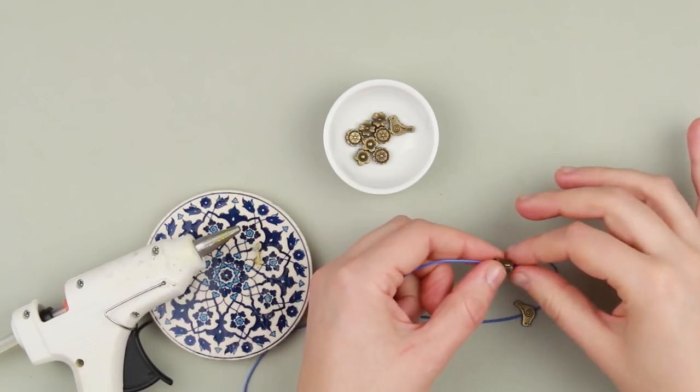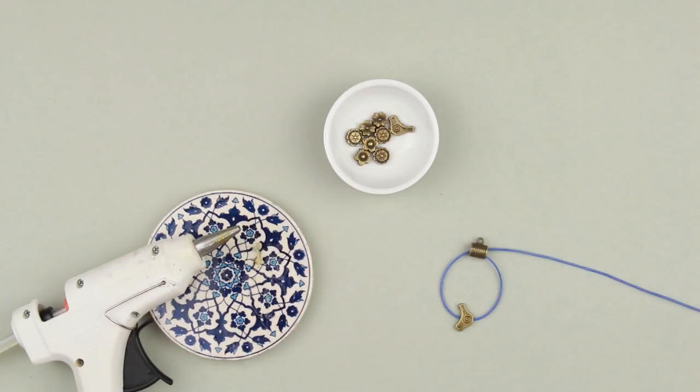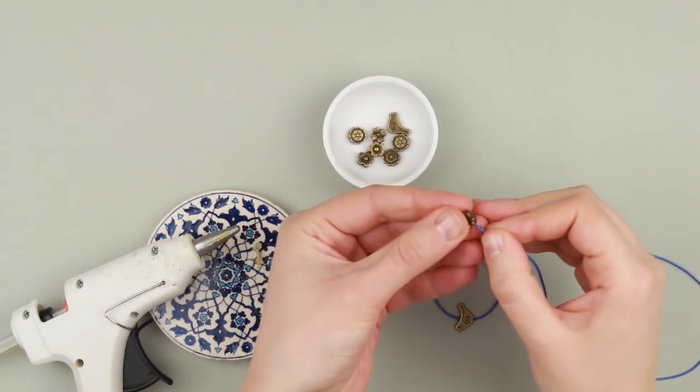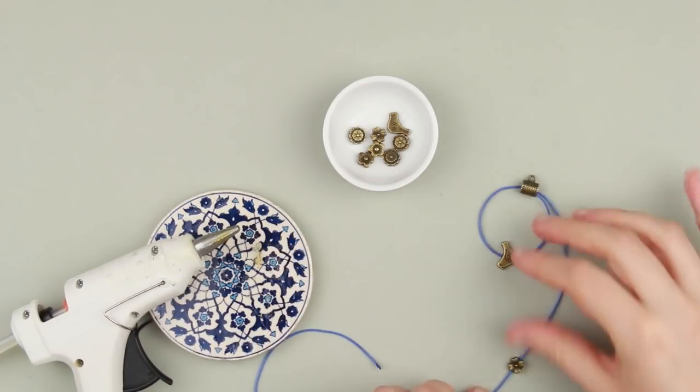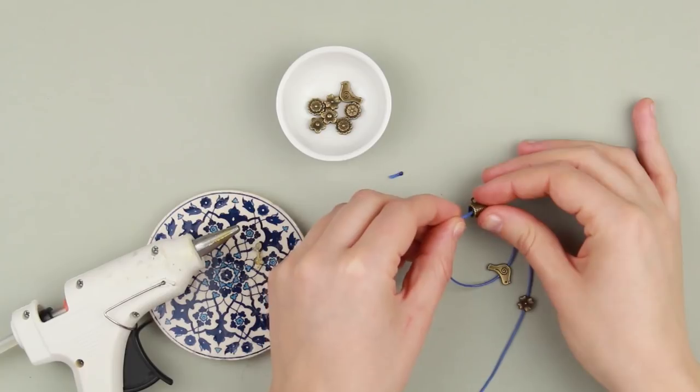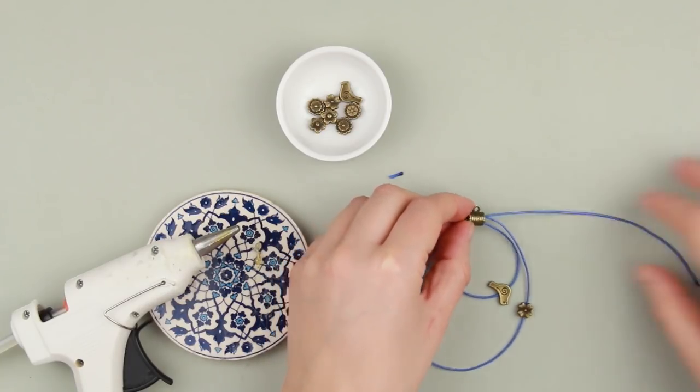Pass the second end through the other side of the connector. Pull up to shape a ring. Thread another charm and pull up. Pass the cord through the tube to make another ring bigger than the previous one.